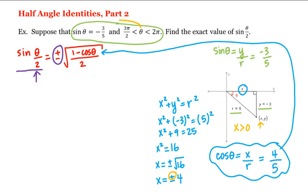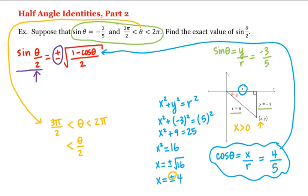Remember that theta lies between three pi halves and two pi. However, we don't want to know where theta lies — we want to know where theta over two lies. So let's divide everything by two. Three pi over two divided by two is three pi fourths, and two pi divided by two is pi. Therefore, theta over two lies between three pi fourths and pi, which means theta over two is in quadrant two, and since sines are positive in quadrant two, sine of theta over two is greater than zero.